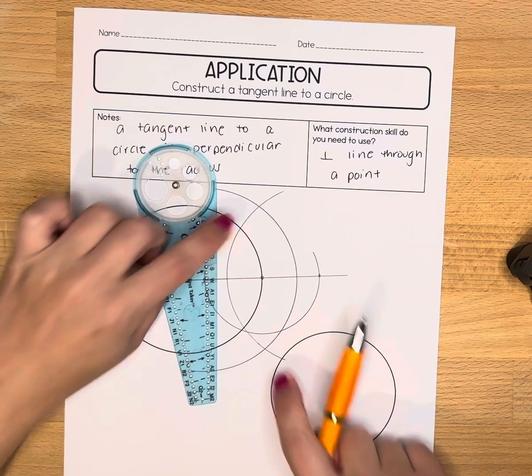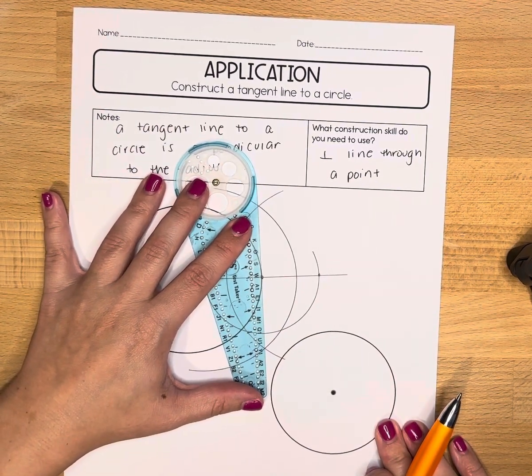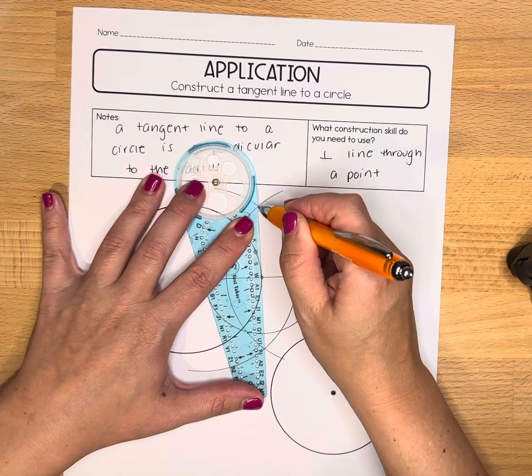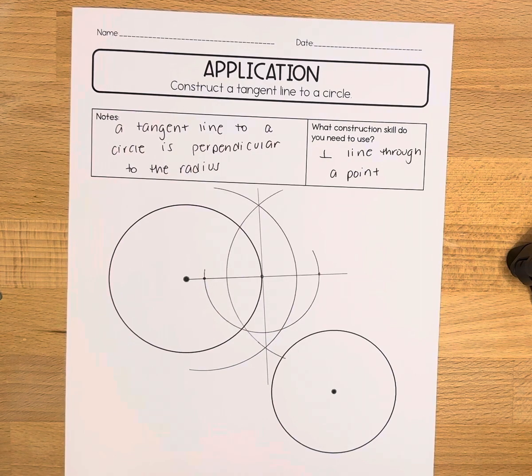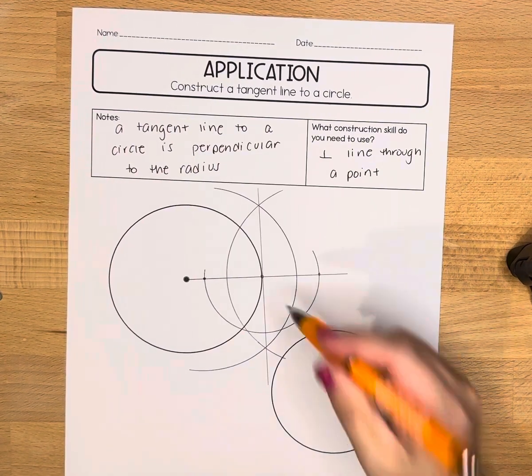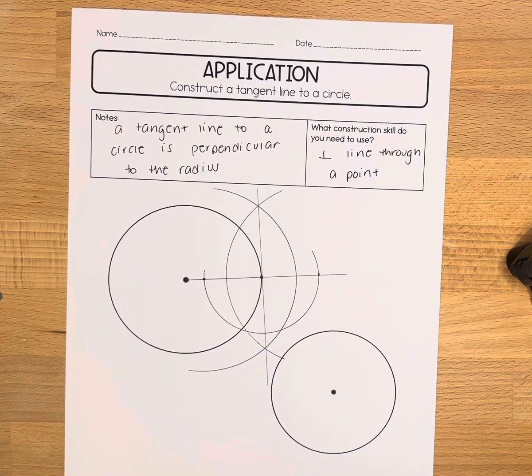We should see two intersections there, so I'm going to use my straight edge to connect. You can see we now have our line that is tangent to the circle, meaning it just touches it at one point right here and it's perpendicular to the radius.